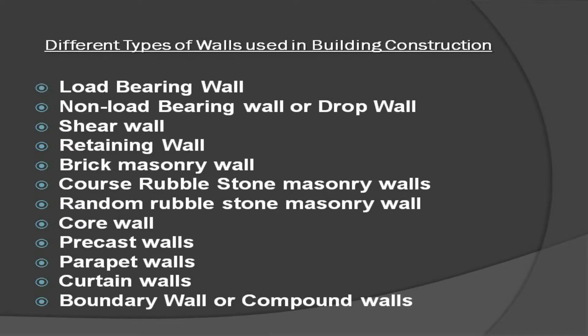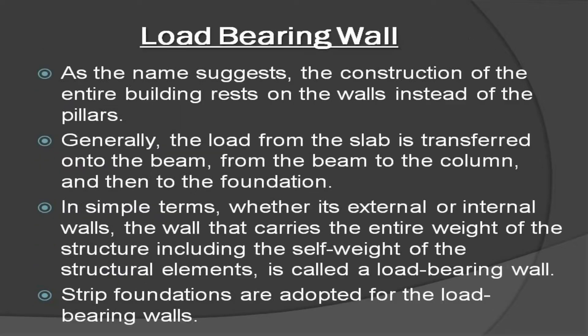Different types of walls used in building construction include: load-bearing wall, non-load-bearing wall or drop wall, shear wall, retaining wall, brick masonry wall, coarse rubble stone masonry walls, random rubble stone masonry wall, core wall, precast walls, parapet walls, curtain walls, boundary wall, and compound walls.